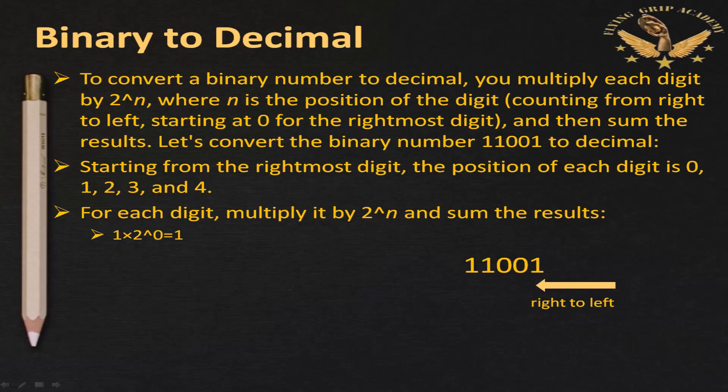To convert a binary number to decimal, multiply each digit by 2 to the power of n, where n is the position of the digit counting from right to left, starting at position 0 for the rightmost digit, then sum the results. Let us convert the binary number 11001 to decimal. Starting from the rightmost digit, the positions are 0, 1, 2, 3, and 4.